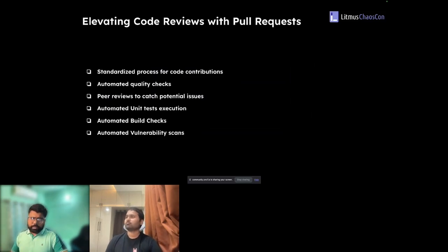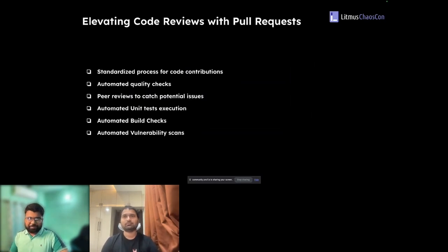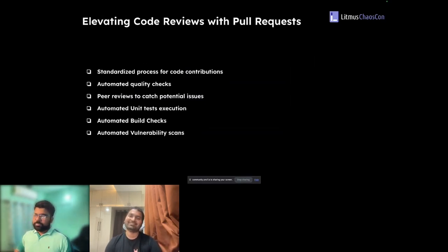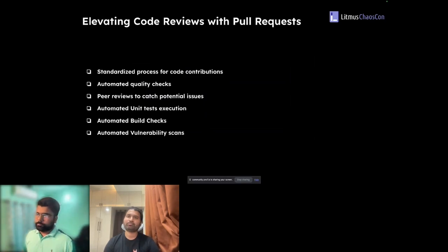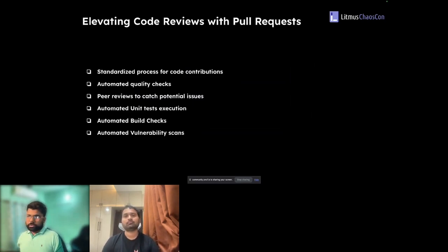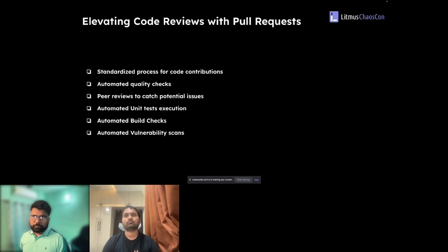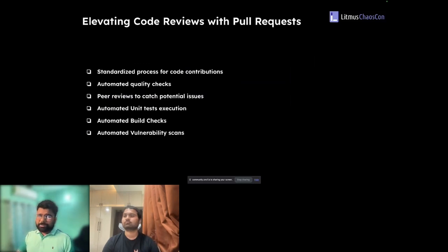Once you've standardized and documented the process, and someone raises a PR, how do you check they've actually followed it? You can't manually go through every line of every PR. You need automation — that's where automated quality checks come in. Once everyone is following the defined code styling and it's being checked as part of the PR, reviewers can then focus on the actual potential issues or the implementation that matters for the business or open source community.